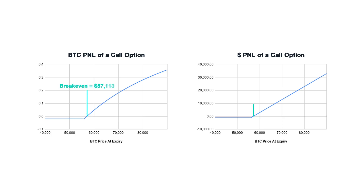Don't worry if you're not really sure what that means — we will explain how it works in this section, including some live examples. Using the cryptocurrency itself as collateral also leads to a difference in the break-even point and maximum profit or loss calculations. It's important to be aware of these differences, particularly when making the jump over to cryptocurrency options from options in traditional markets.